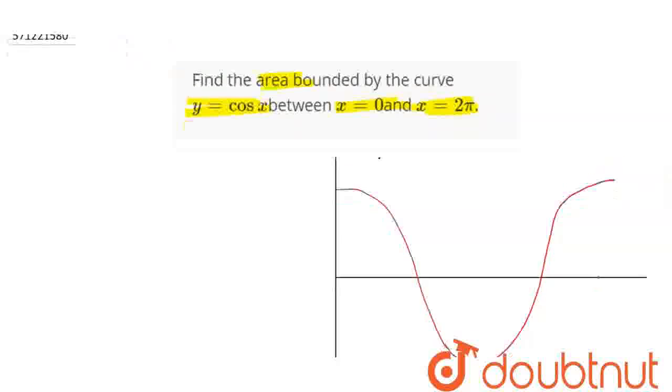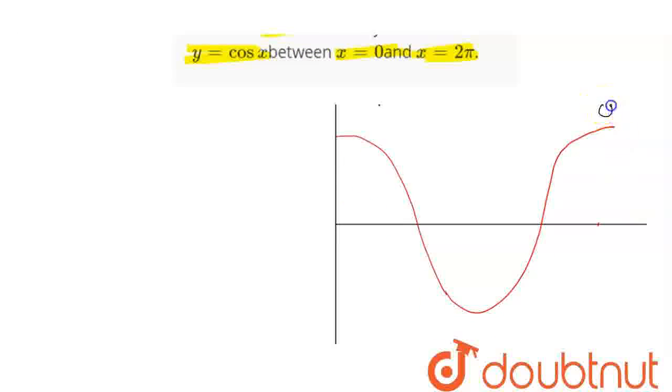So, this is a curve of cos x. This is the value at 0. This is the value at π by 2. This is the value at π. This is the value at 3π by 2 and this is the value of cos at 2π.